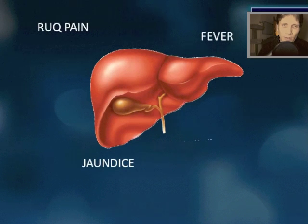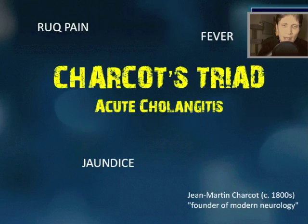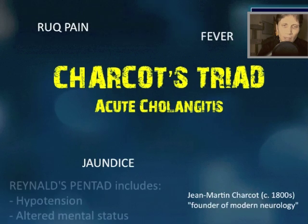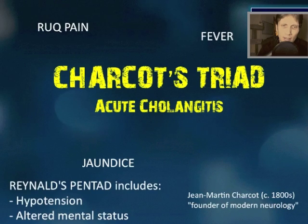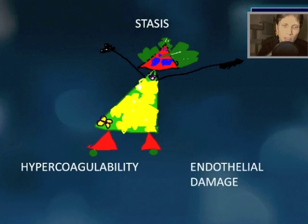Right upper quadrant pain, fever, and jaundice — name the triad and the associated condition. This is Charcot's triad, and you might see this with acute cholangitis. The other two things that make this Reynolds pentad include hypotension and altered mental status. When you have all five of those, that is Reynolds pentad.